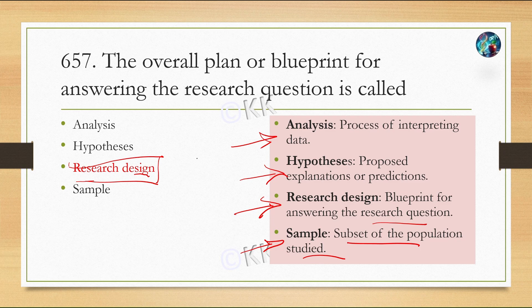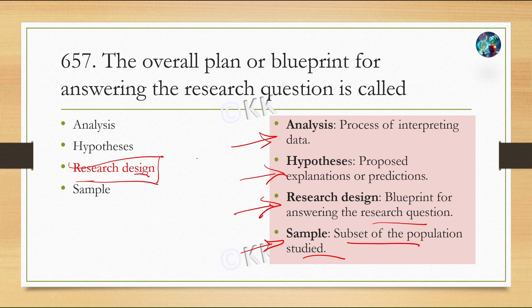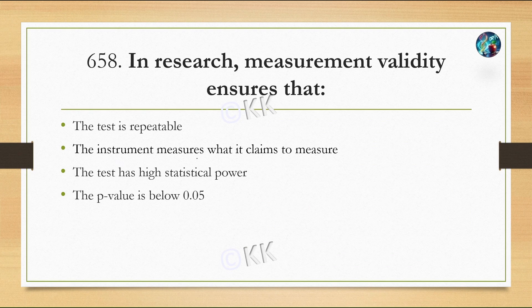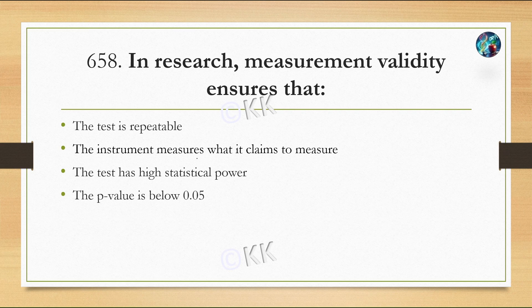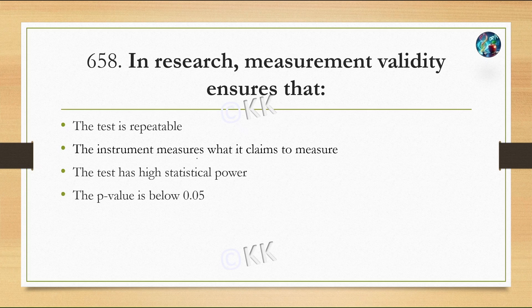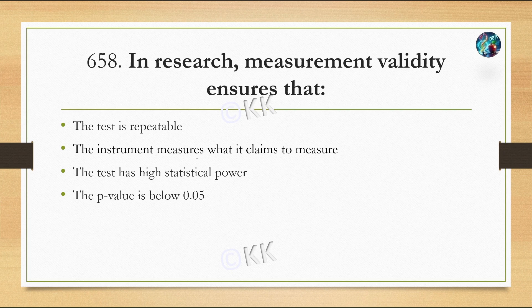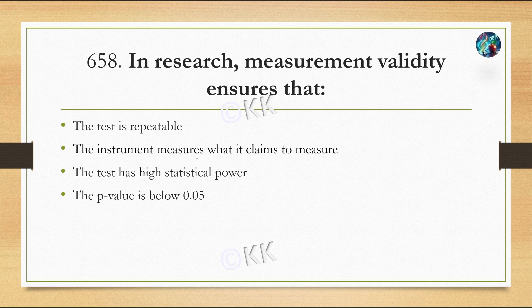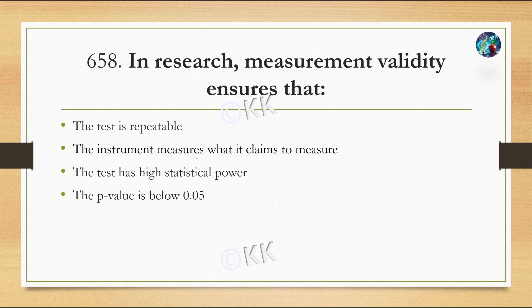Next question: In research, measurement validity ensures that: Option A, the test is repeatable; Option B, the instrument measures what it claims to measure; Option C, the test has high statistical power; Option D, the p-value is below 0.05. The correct option is Option B, the instrument measures what it claims to measure.